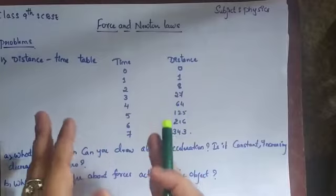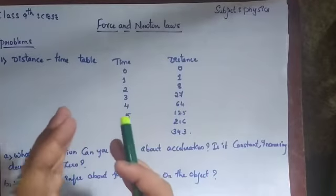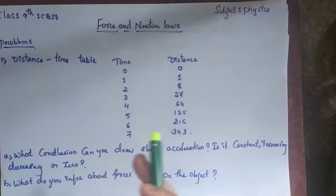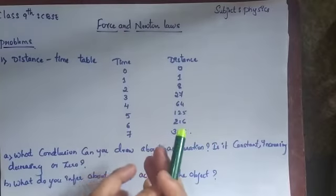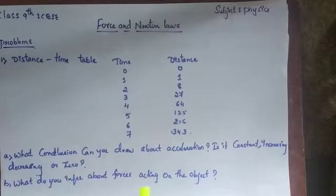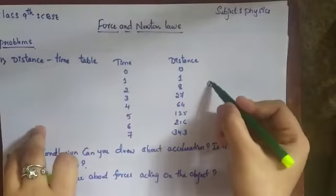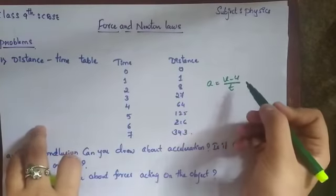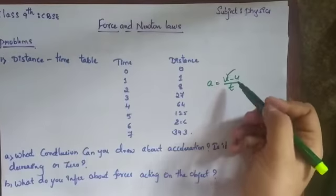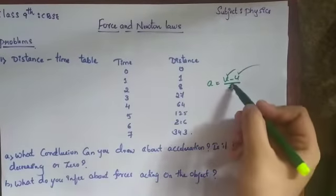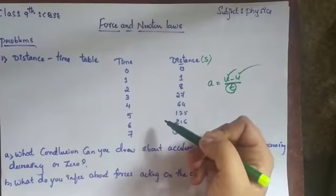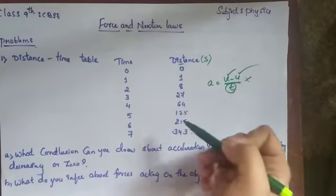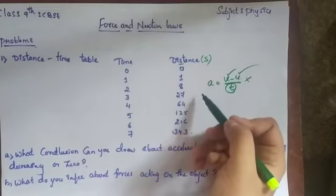To find the acceleration, we have three formulas: (1) a = (v - u) / t, (2) s = ut + ½at², and (3) v² - u² = 2as. If we consider a = (v - u) / t, we only have time — we don't have initial or final velocity — and the table gives distance. So we cannot use this formula.